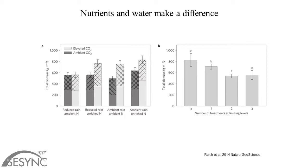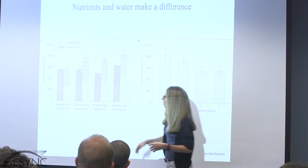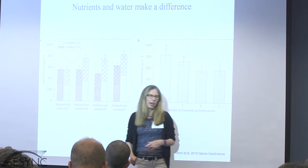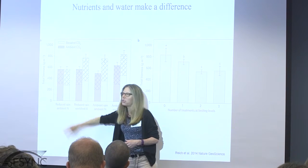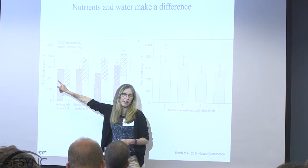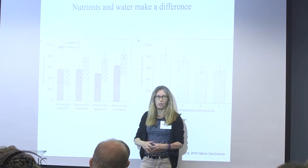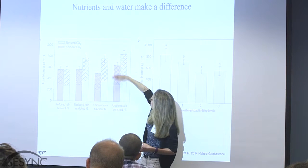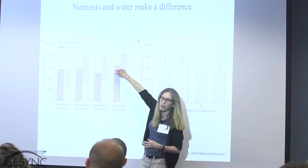Nutrients and water can also make a difference. This is data from a recent paper by Raish et al. published in Nature where they did, in a grassland system, a long-running experiment with elevated and ambient CO2 plots. In grasslands you can replicate because plot sizes are smaller. They had reduced rain and ambient nitrogen, reduced rain and enriched nitrogen, and every combination. What they found was that when water and nitrogen were at their low levels — in a low nitrogen environment — there's no effect of elevated CO2. They only began to see an effect of elevated CO2 when one of the other resources was increased in availability. And when both resources were increased, they got a little bump, although the control site also got a bump.